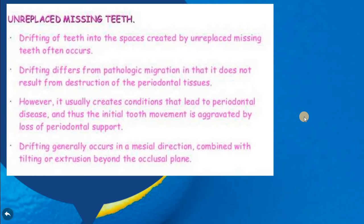Regarding unreplaced missing teeth: drifting is different from pathological migration. Drifting is somewhat physiological, not pathological. It occurs when there is an unreplaced missing tooth in the antagonist or adjacent area. Drifting differs from pathological migration in that it does not result from destruction of periodontal disease. However, it usually creates conditions that lead to periodontal disease, so the initial tooth movement is aggravated by loss of periodontal support. Drifting generally occurs in a mesial direction, combined with tilting or extrusion beyond the occlusal plane.